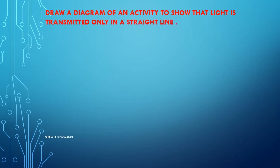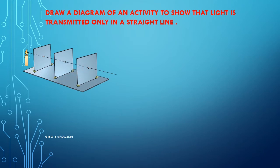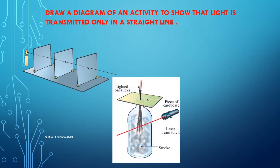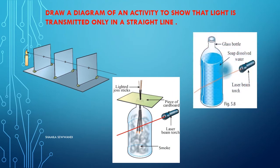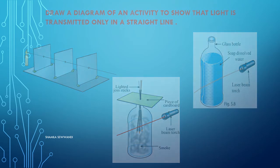Draw the diagrams of an activity to show that light is transmitted only in a straight line. In the first experiment, when the holes are in a straight line, the flame could be observed. When they are not in a straight line, the flame could not be seen. In the second and third experiments, you can see light rays transmitted in a straight line.